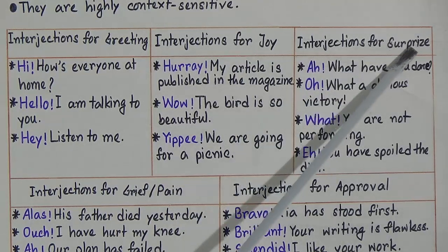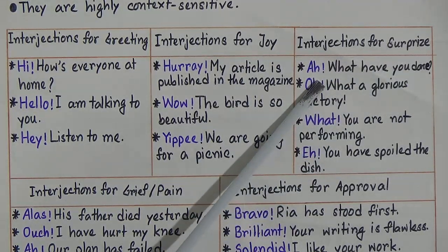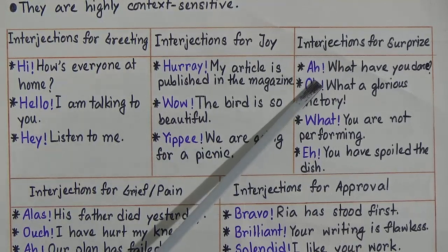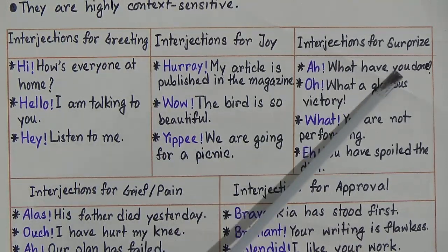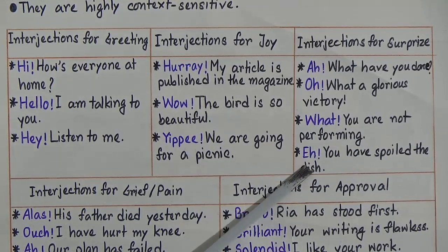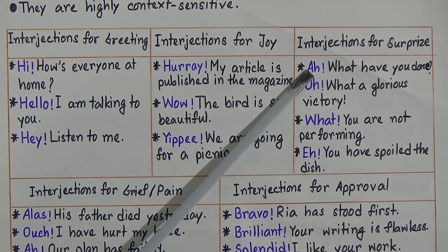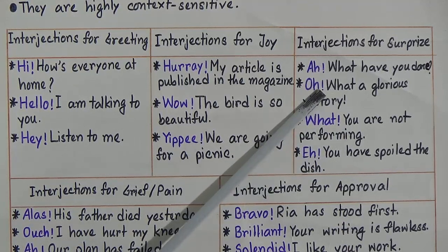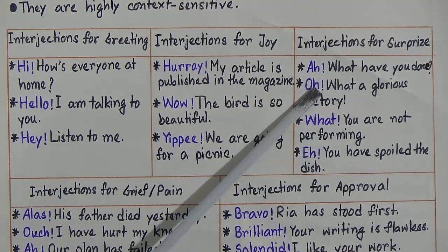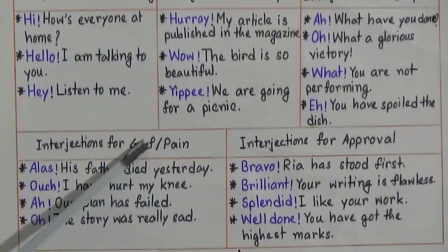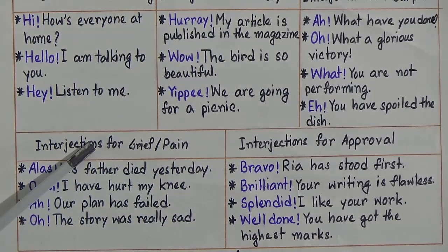Interjections for surprise are used to show intense emotion about something that surprises us. For example: Ah! What have you done? Oh! What a glorious victory! What! You are not performing? Hey! You have spoiled the dish. The interjections ah, oh, what, and hey show the emotion of surprise, and we use them when we want to express being surprised.